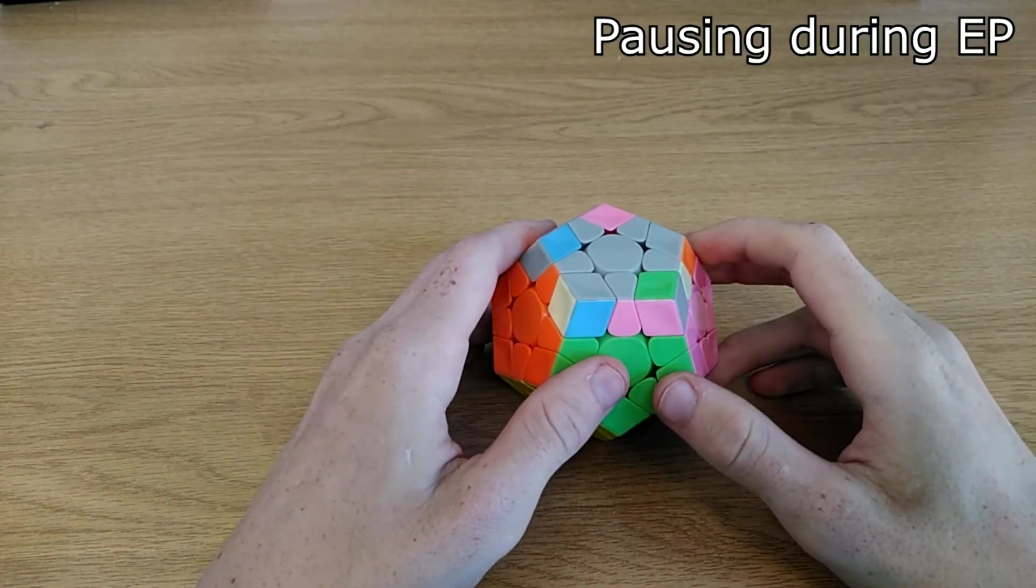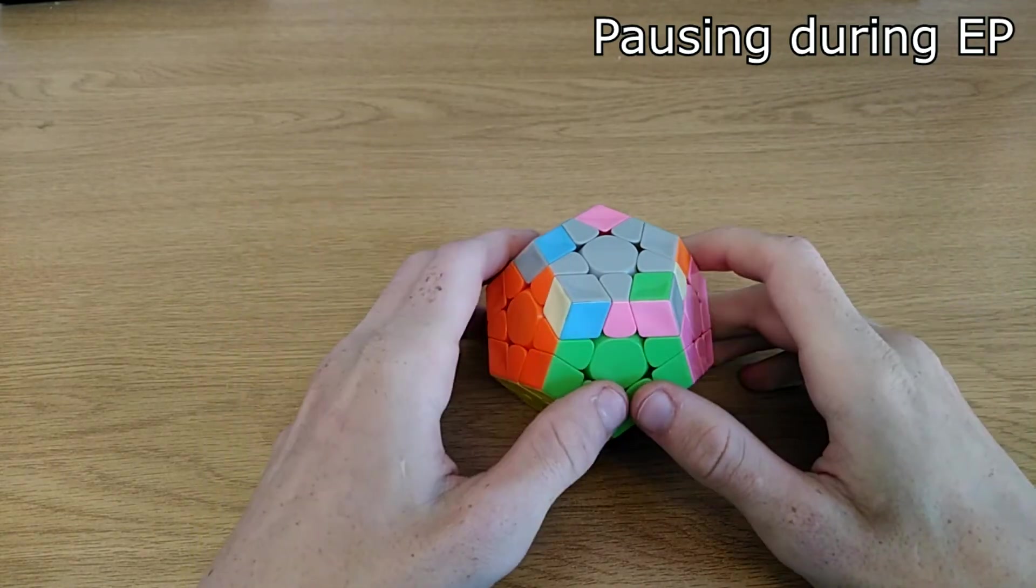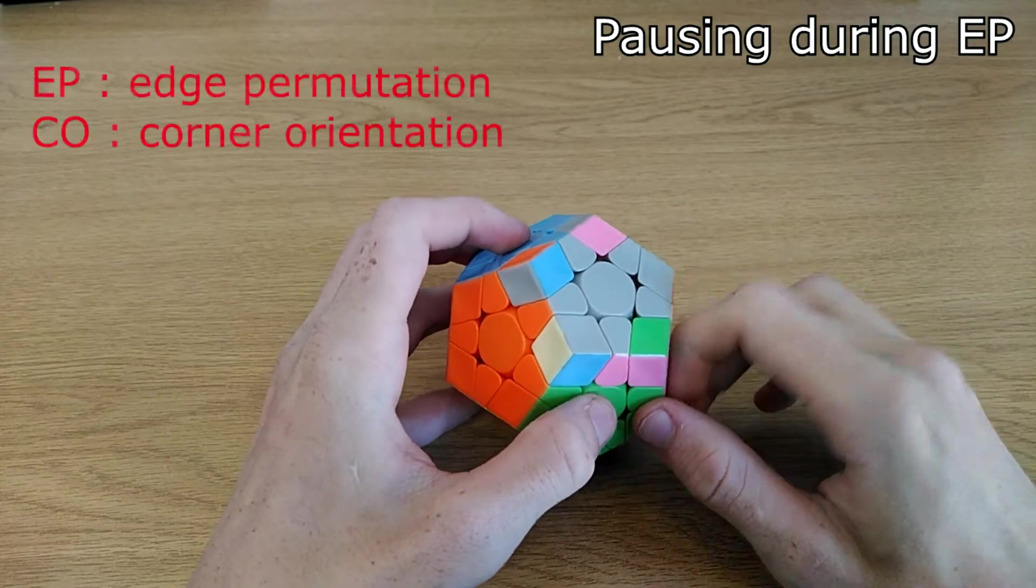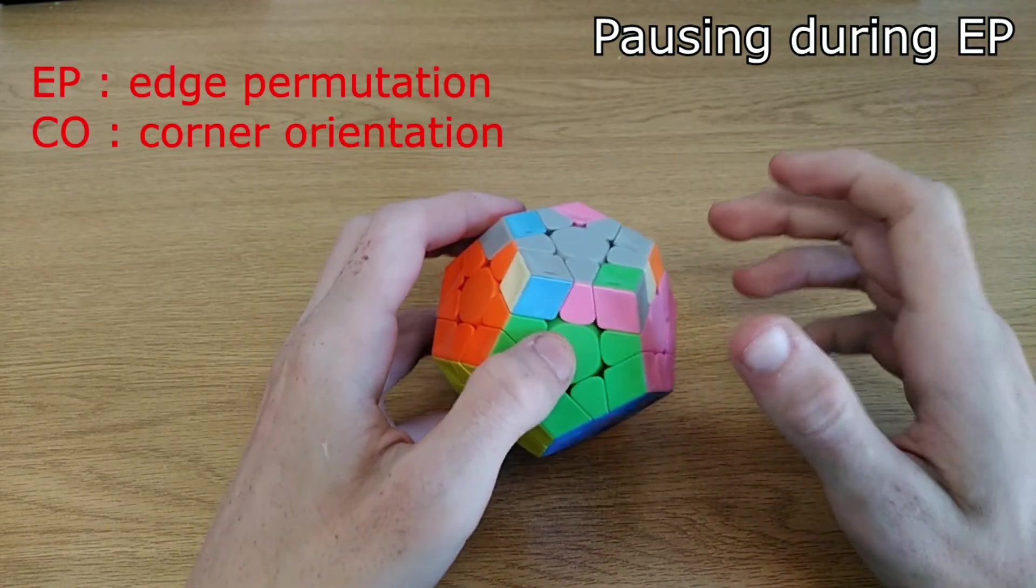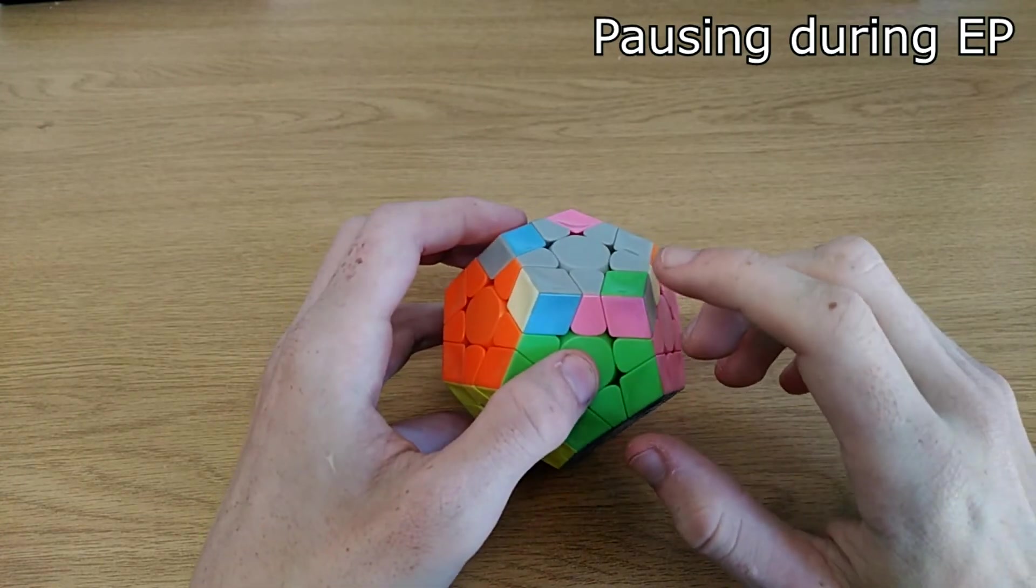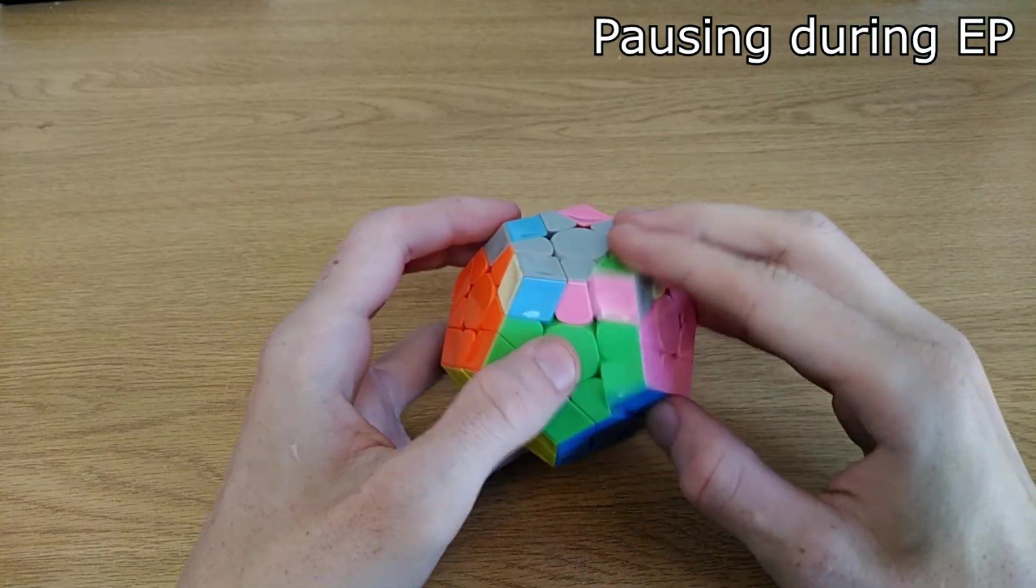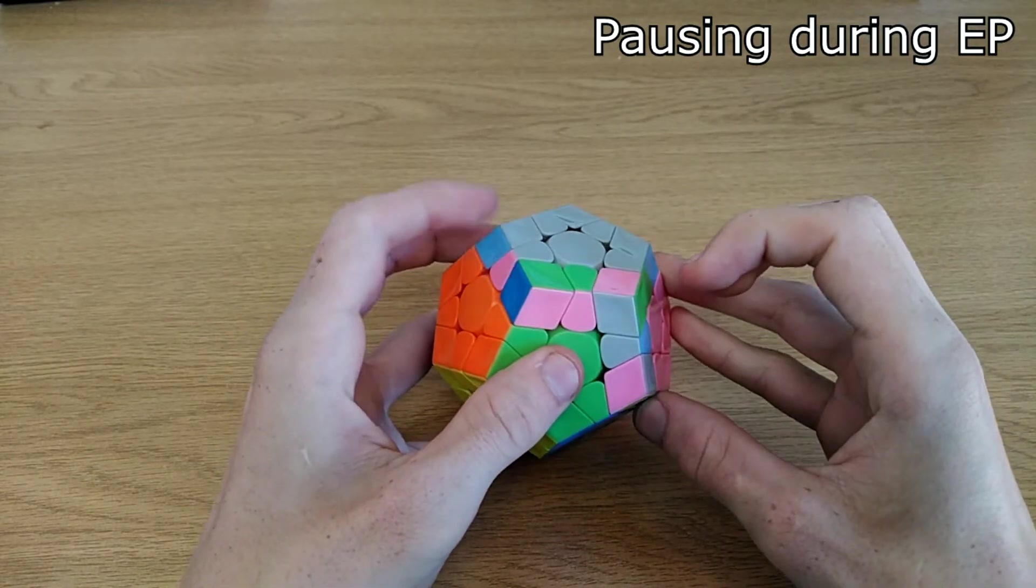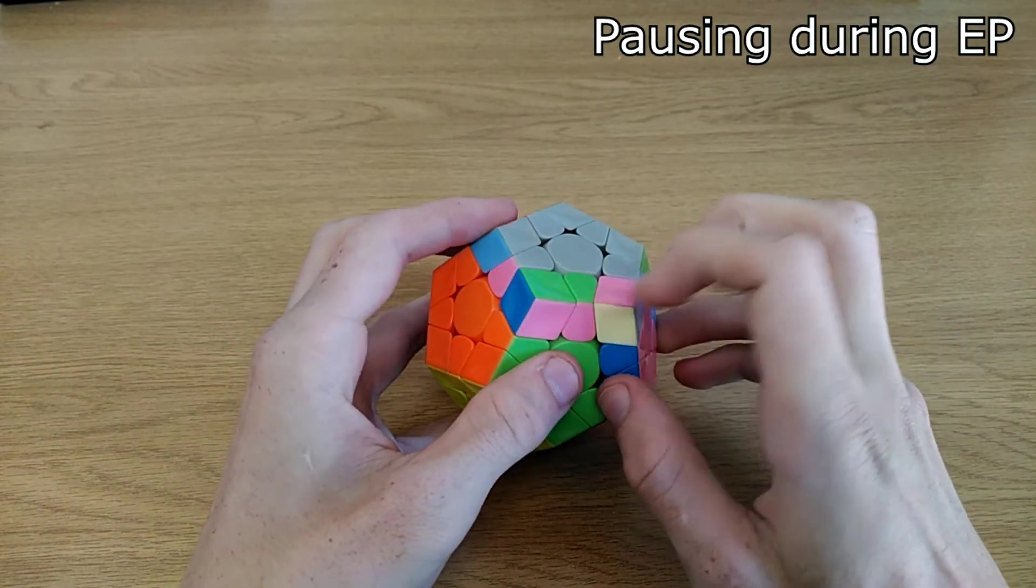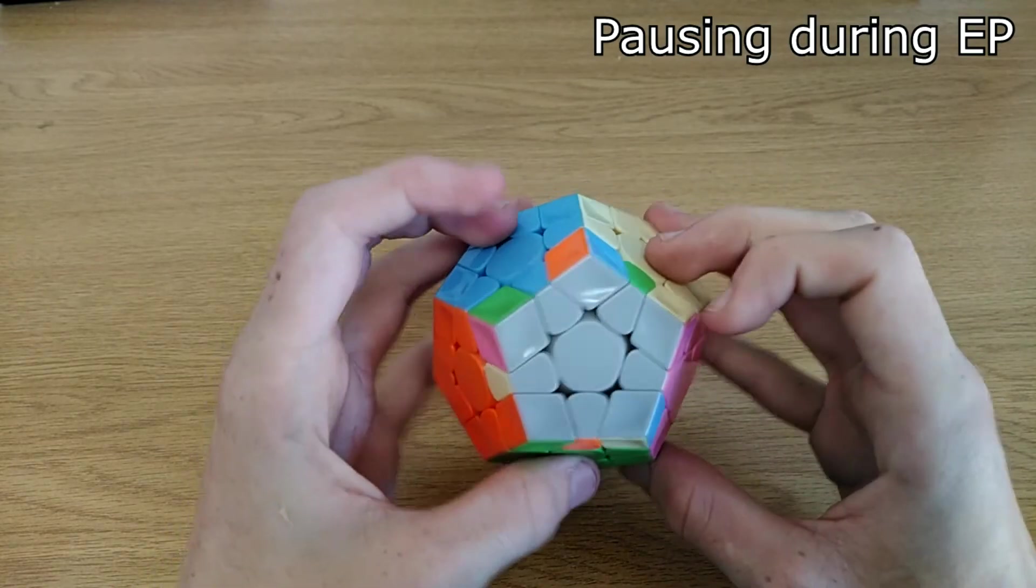Number 4: Pausing at EP. There's nothing worse than having a great solve but pause for two seconds once you do EP. There's a very easy way to predict what you will have to do in EP while you're doing CO. Before you start the CO algorithm, look at one edge piece and track that edge piece. So for instance here, I'm going to look at this pink, and once I do the algorithm, I see it's going to be right here, so I can immediately do a U' to put it in its correct place, and then look for the second piece.